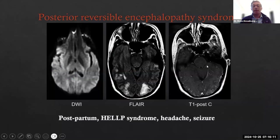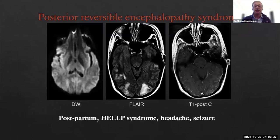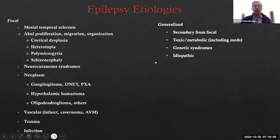Other emergency findings can also lead to a seizure. For instance, a patient presenting with PRES shows signal changes in the posterior lobes with mild enhancement and no associated diffusion abnormalities — a typical appearance for PRES.